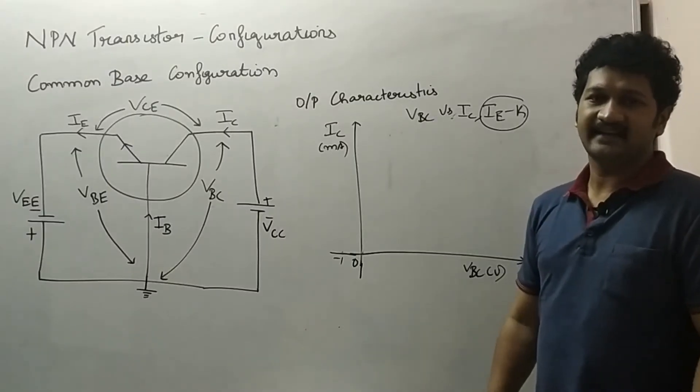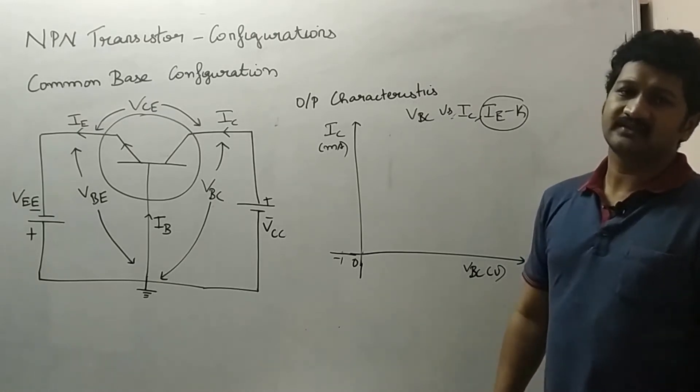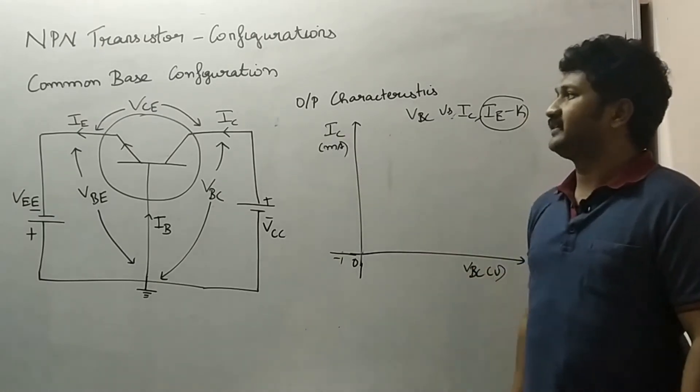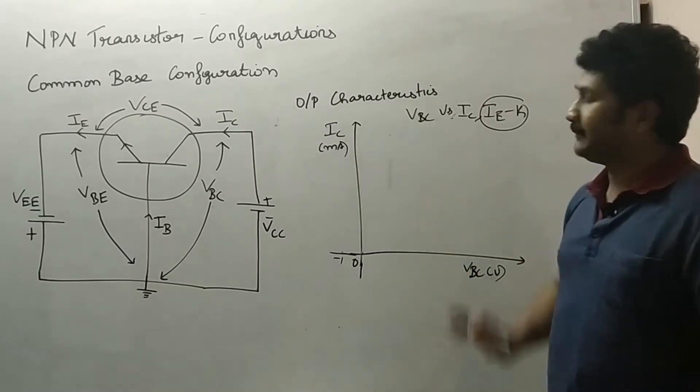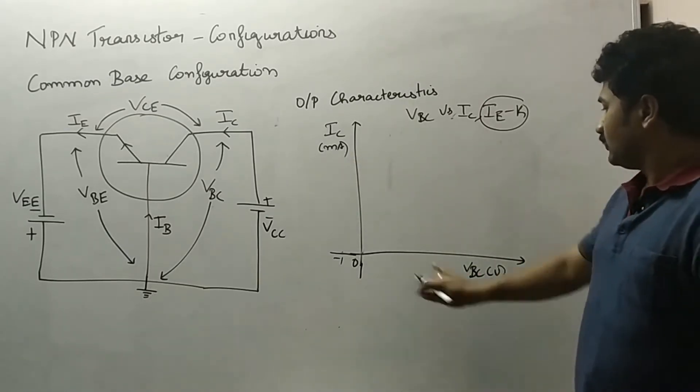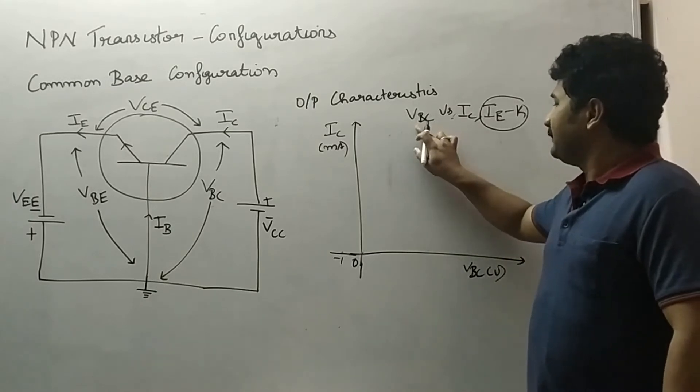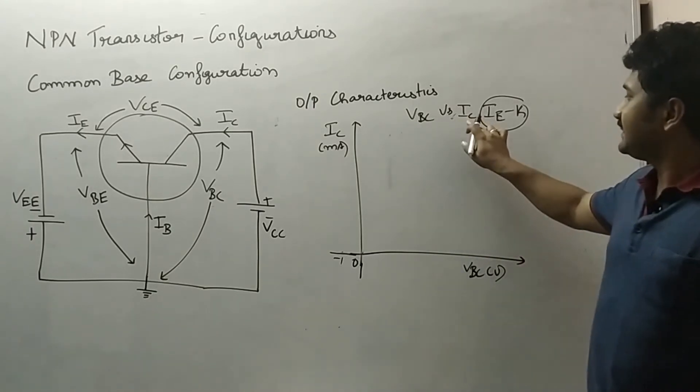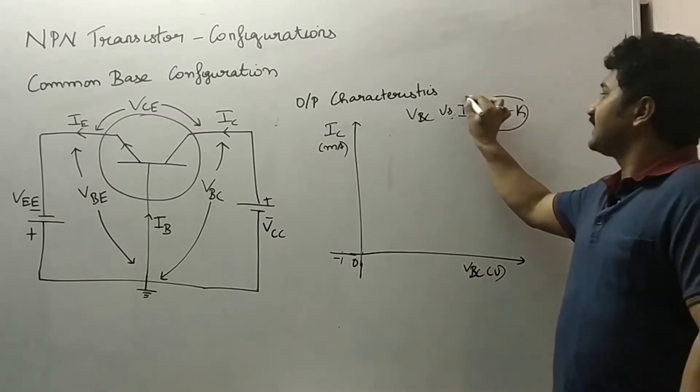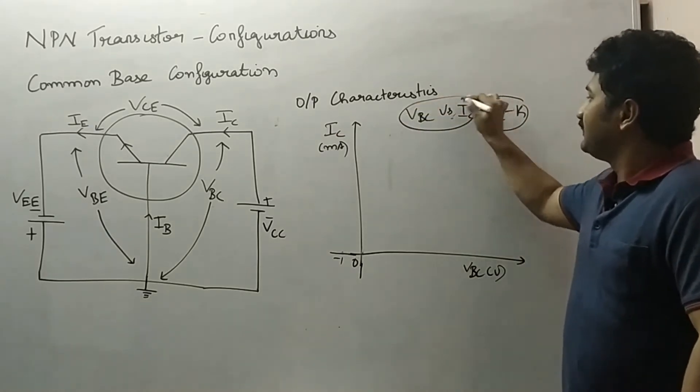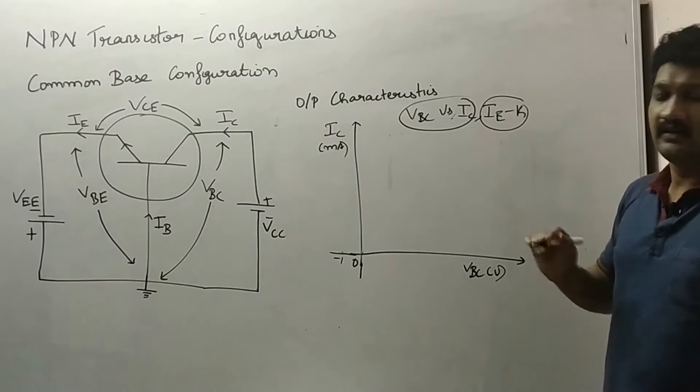Hello everyone, welcome to my channel. In this video we are going to discuss the common base configuration of an NPN transistor and its output characteristics. In this case, VBC is the output voltage, IC is the output current, keeping IE as constant. We are going to study the characteristics curve of VBC versus IC.